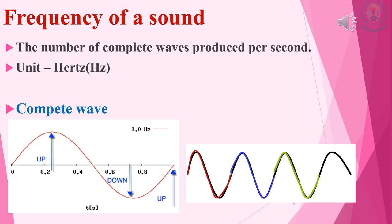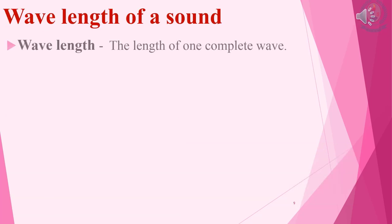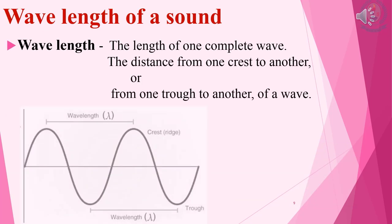Can you identify how many complete waves there are in the second picture? There are three complete waves. The wavelength of a wave is the length of one complete wave.